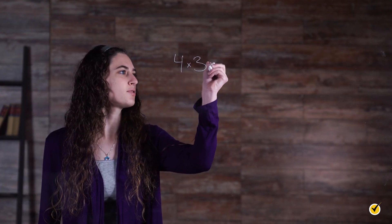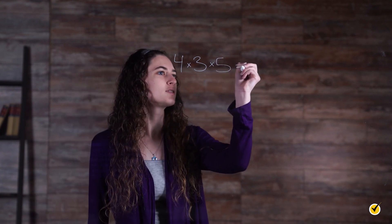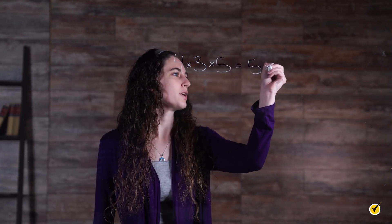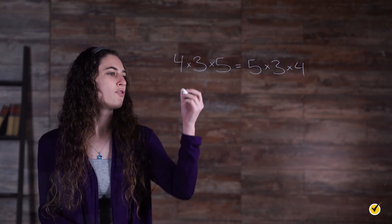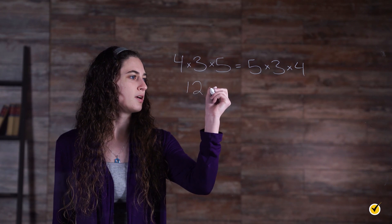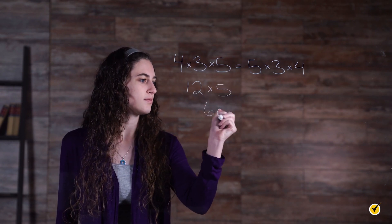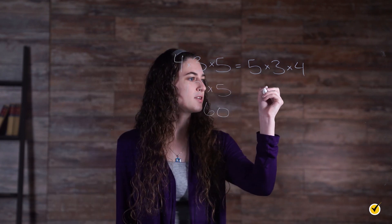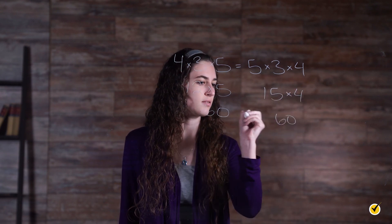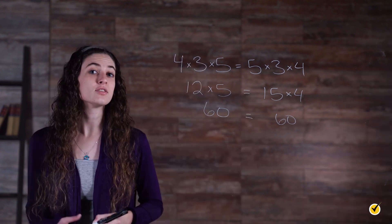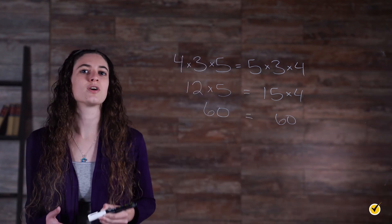The commutative property does however apply to multiplication. 4 times 3 times 5 is equal to 5 times 3 times 4. Let's do the math just to make sure. 4 times 3 is 12, times 5 is 60. And 5 times 3 times 4 is also 60. Even though we switched around the terms, we got the same result.